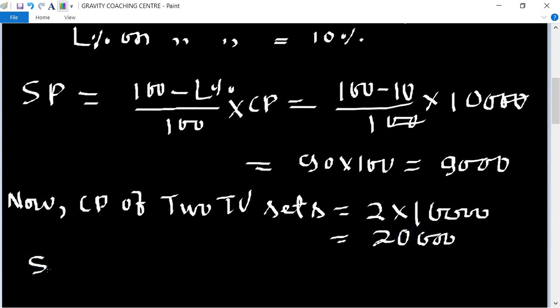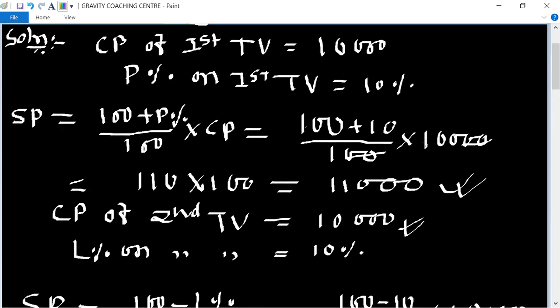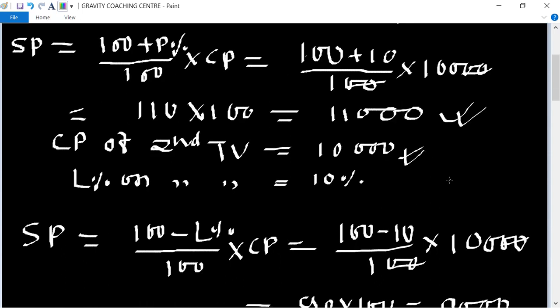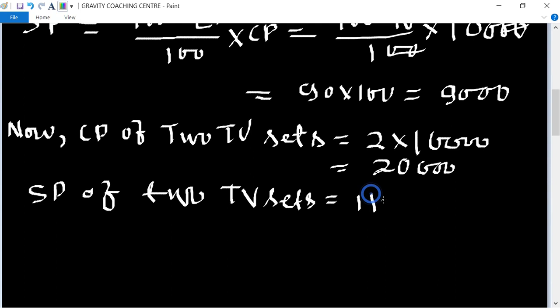SP of two TV sets equals the SP of first TV is 11,000, so 11,000 plus 9,000 equals 20,000. So here the CP and SP of two TV are equal, so there is no profit or loss.